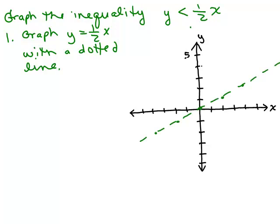I just used the slope intercept method because I graphed with a slope of 1 half, y intercept of 0. I went over 2 and up 1, over 2 and up 1, and I got these dots, and then I drew my dotted line.